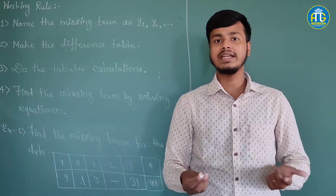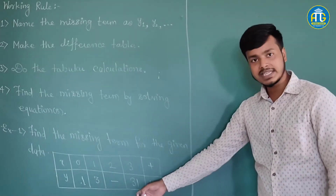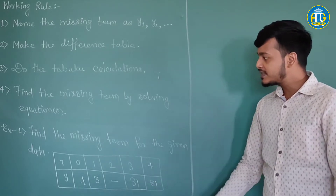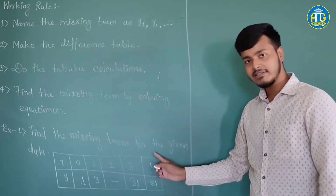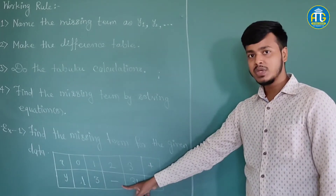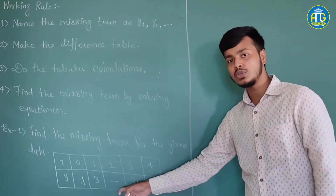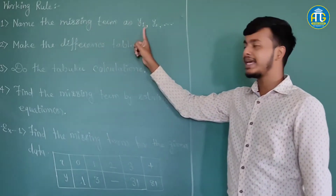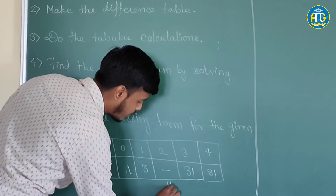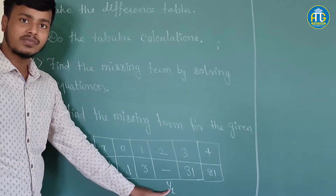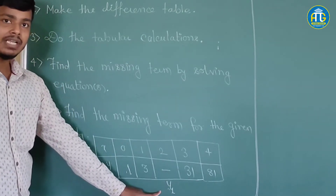Two equations and two unknowns is an ideal condition. If a problem has one missing term, there would be one expression to get. When two terms are missing, we would get two expressions or two equations to solve. Now let us start with the first example: find the missing term for the given data. We have just a single missing term, so I will name the missing term as y1, and my objective is to find out the value of y1.